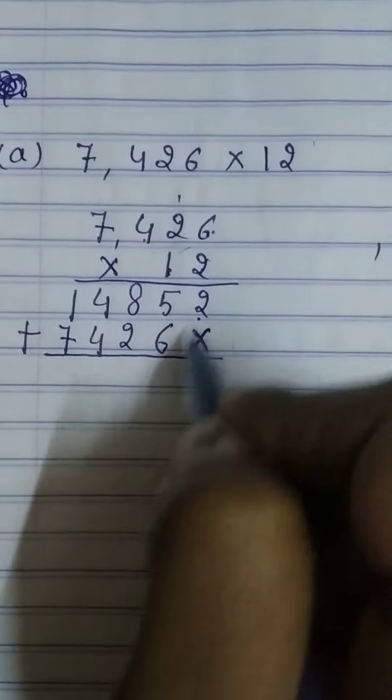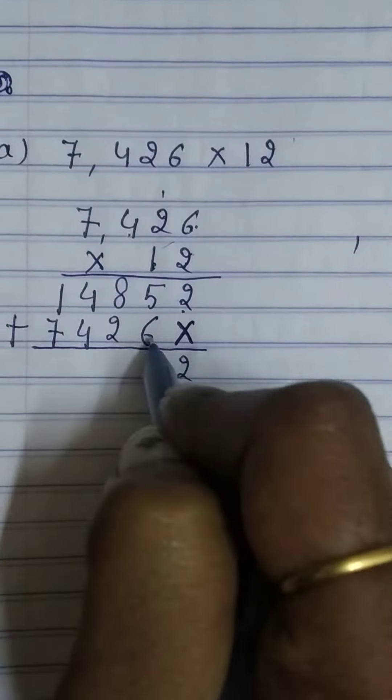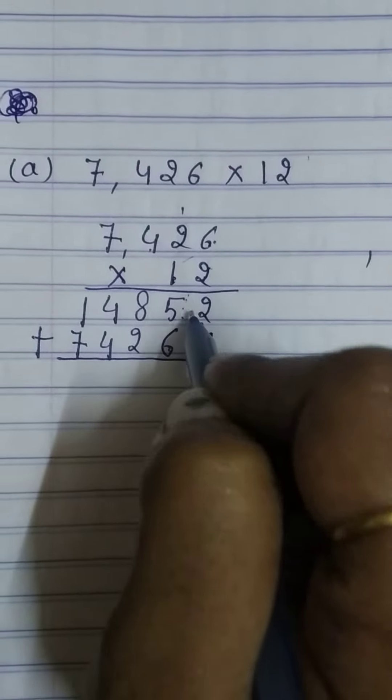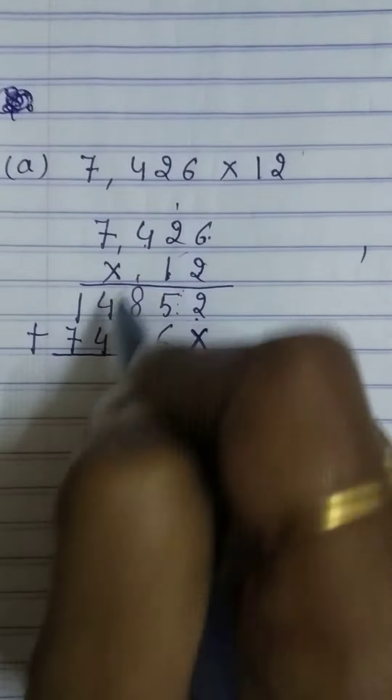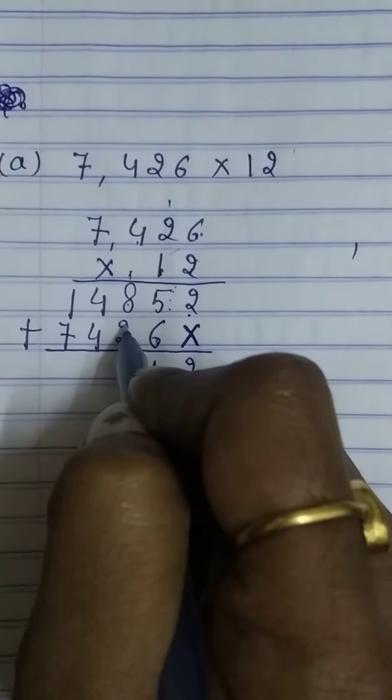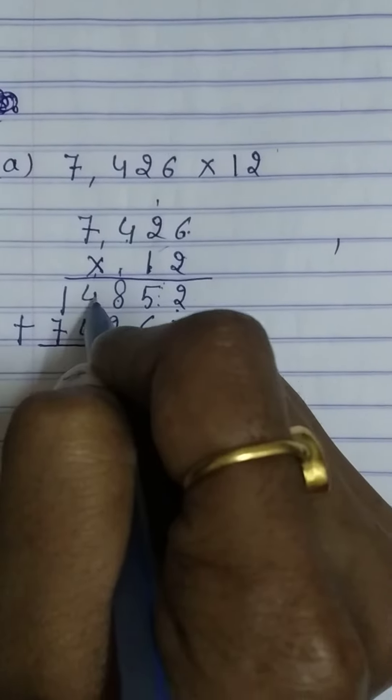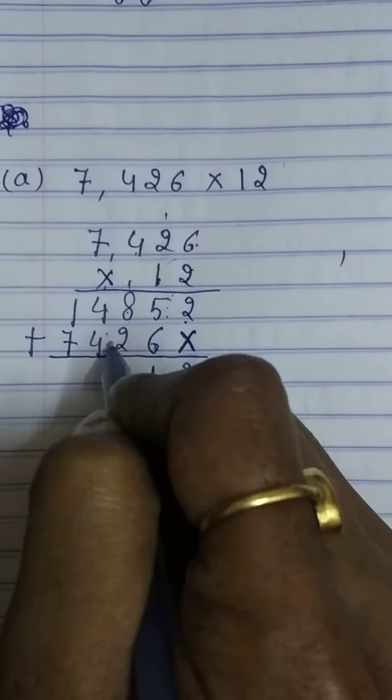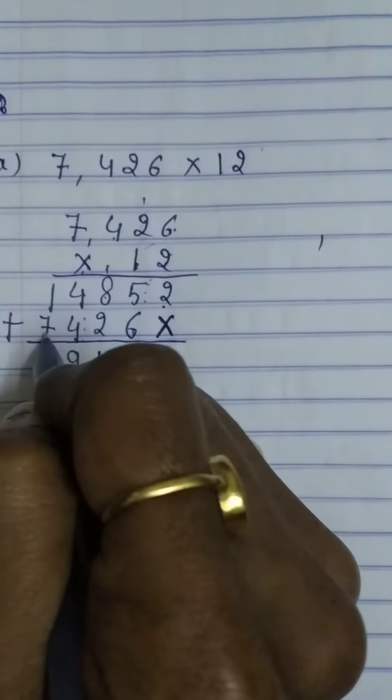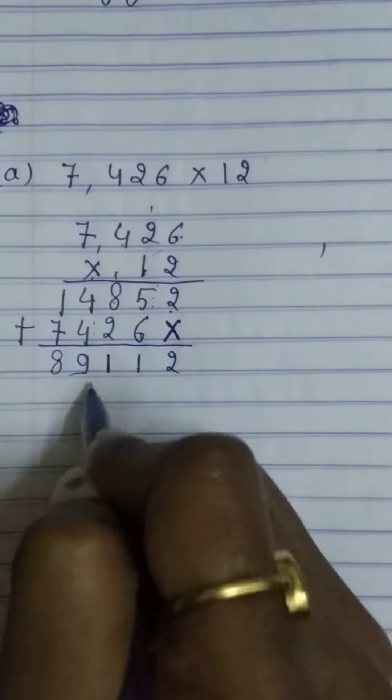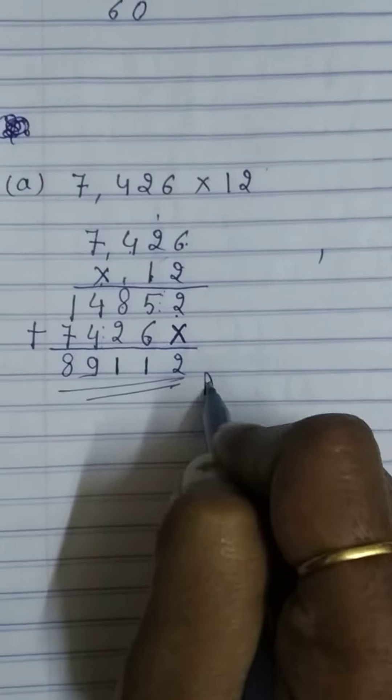After that, we have to add both these numbers. 1, 4, 2, 6, 7, 8, 9, 10, 11. 1, 1 is carry. 8, 9, 10, 11. 1, 1 is carry. 4, 5, 6, 7, 8, 9, 7, 8. So, this is your answer.